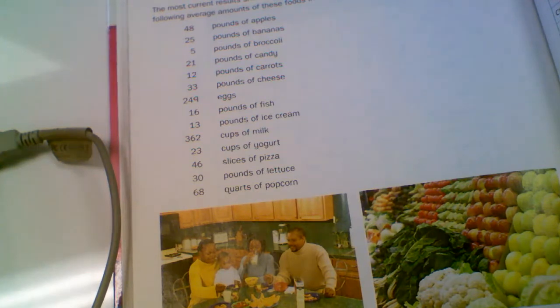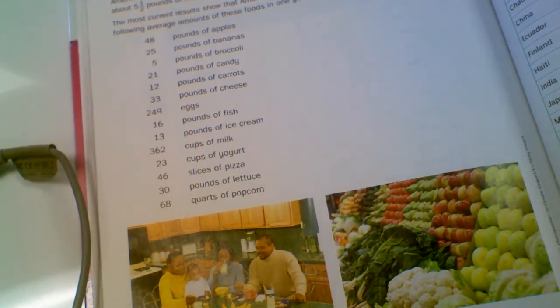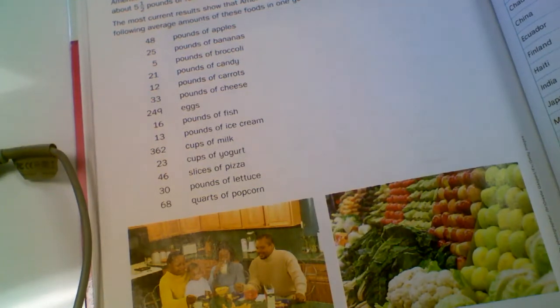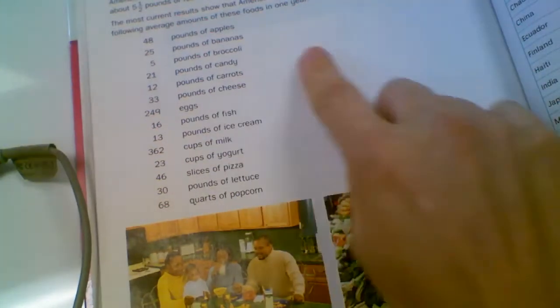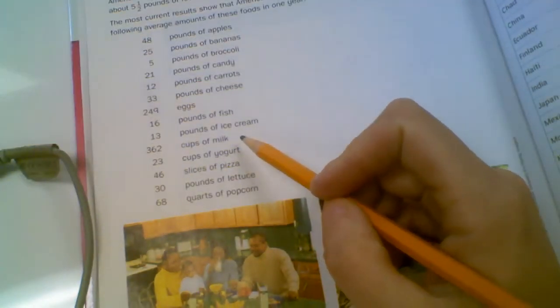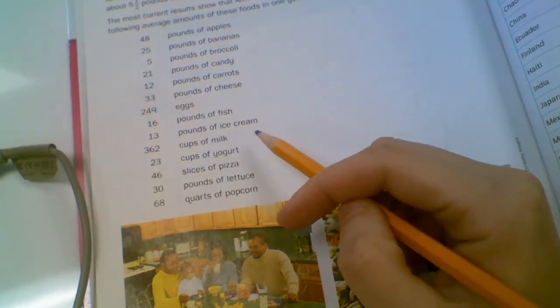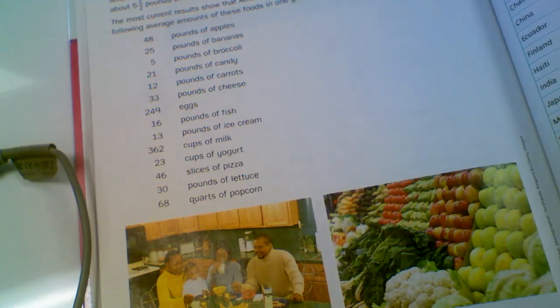What? 12 pounds of carrots, 33 pounds of cheese, 249 eggs. So not pounds, eggs. So just think how many you ate. 16 pounds of fish, 13 of ice cream, 362 cups of milk. So that's almost a glass of milk every day. 23 cups of yogurt, 46 slices of pizza, 30 pounds of lettuce, and 68 quarts of popcorn. So I want you to think to yourself, does any of this information surprise you? I know it surprised me. Hearing all that candy. Oh, my goodness.